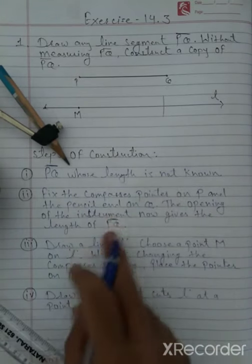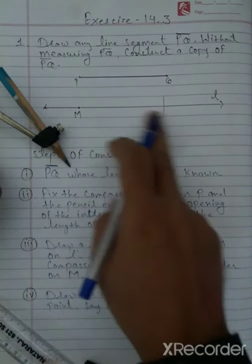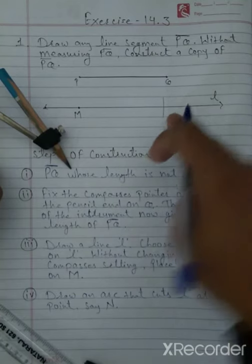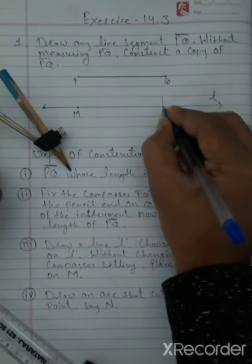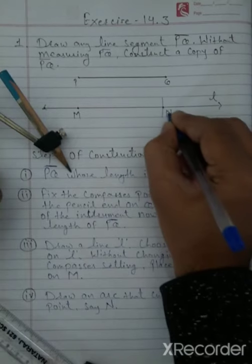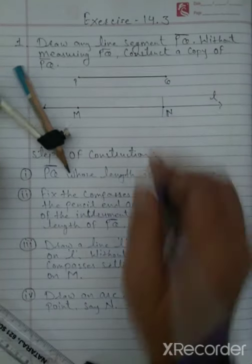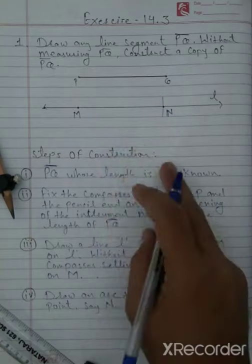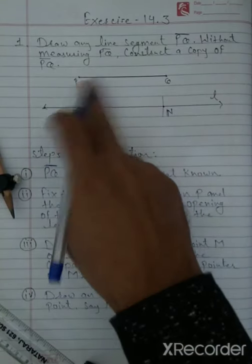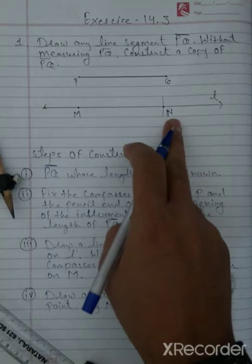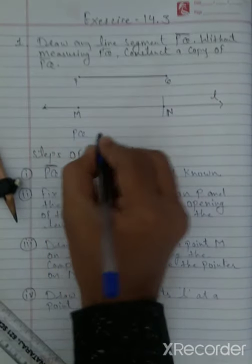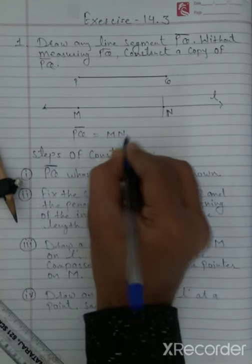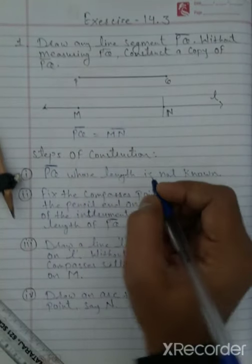The arc cuts line l at a point — we write the name of this point as N. Now you can see that PQ is equal to MN. The copy of line segment PQ is MN.